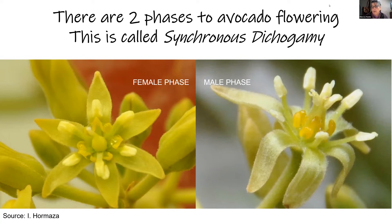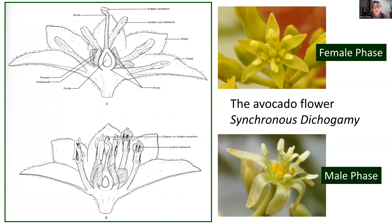After the female phase is over, the flower closes, the pollen grains inside the anthers mature, and then the flower reopens as a male flower. When fertilization occurs, the pollen grain lands on the stigma and grows down the style to cause fertilization in the ovule. In cross-section, the flowers look very different in the female and male stages. As a grower, it's very important to be able to go out and recognize these two different phases during flowering — just recognize that there are two synchronized phases: first female, then male.